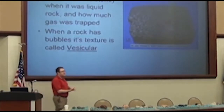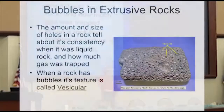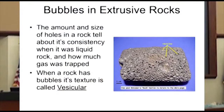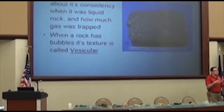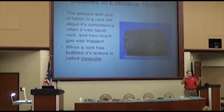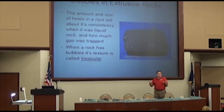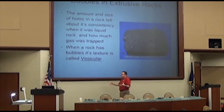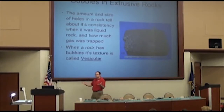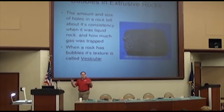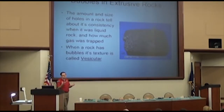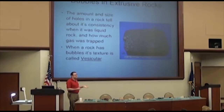There's another feature we look at in igneous rocks — whether or not it has bubbles in it. The bubbles are usually formed from dissolved gases inside the liquid rock, just like when you shake a soda pop and all the bubbles come out — that CO2 was dissolved inside the soda. There are lots of dissolved gases dissolved inside liquid rock, and depending on how it came out of the earth, sometimes those gases were escaping as the rock was cooling. That gives us bubbles and holes you can see inside the rock. The term for those bubbles is vesicles, and when a rock has lots of bubbles, we say it's vesicular.